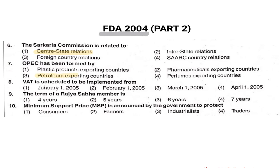OPEC was formed for petroleum exporting. VAT was implemented from April 1st, 2005 — we will see more about GST in the explanation later. The term of a Rajya Sabha member is six years. Minimum support price is announced by the government to protect farmers.